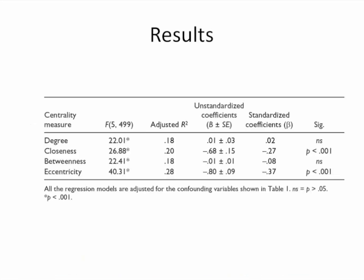As the outcomes of this study showed, there was a strong significant association between closeness centrality and eccentricity with academic performance, while degree and betweenness centrality were not significantly associated with academic achievement. This basically means that those students who are central in cross-class networks — those who need to traverse the lowest number of other nodes to access some other node in the network — were best placed and had the best academic performance.